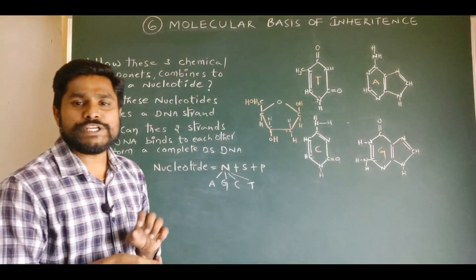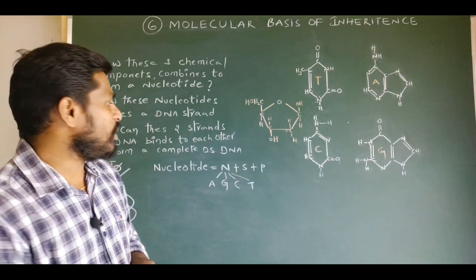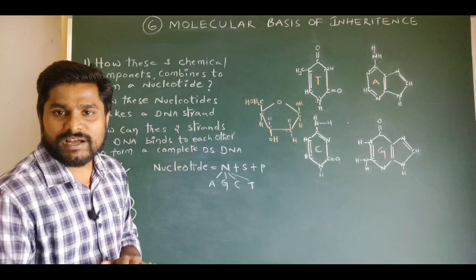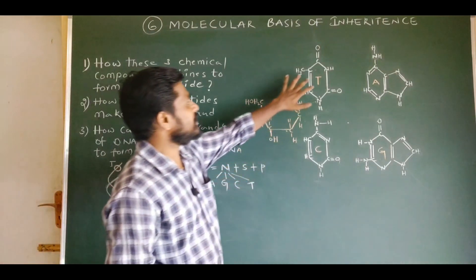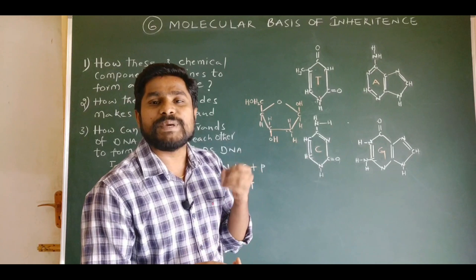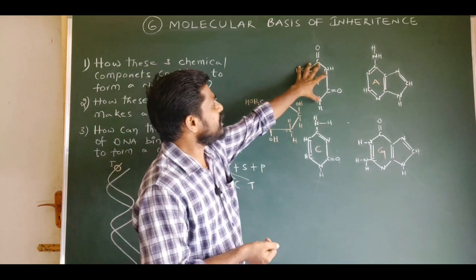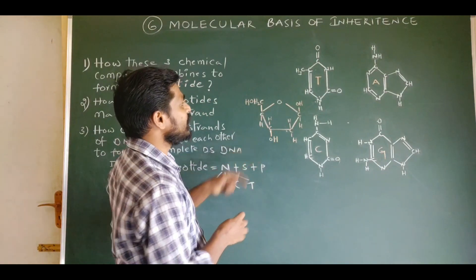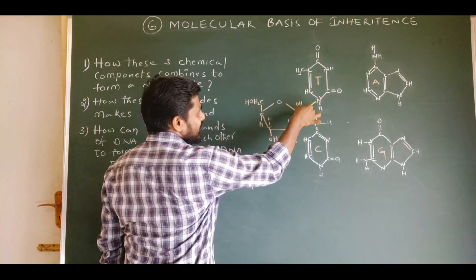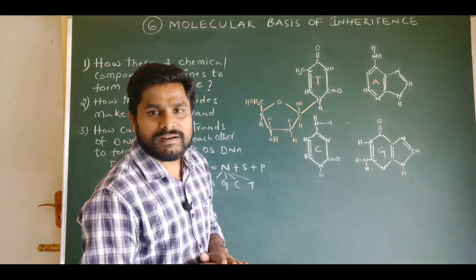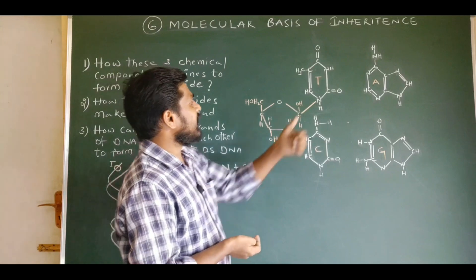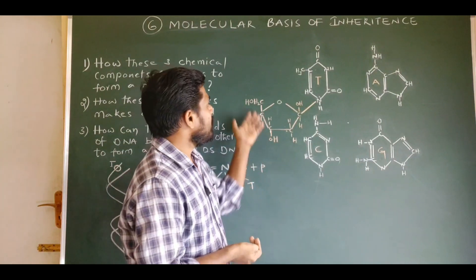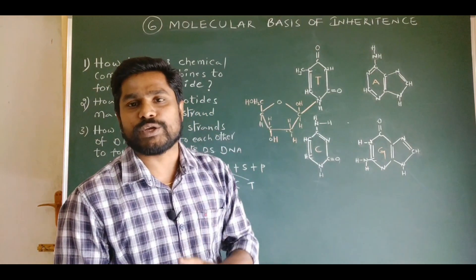I want to make you understand the nature of the bonding pattern among these three chemical components, which finally makes a nucleotide molecule. This is thymine, a nitrogen base which is a pyrimidine. This nitrogen base thymine binds to pentose sugar by means of a glycosidic bond, formed between the nitrogen at the first position of the nitrogen base and the carbon at the first position of the pentose sugar, by the elimination of one molecule of water.